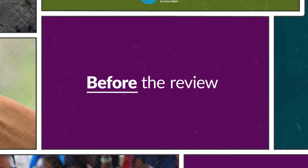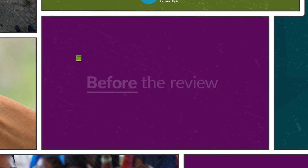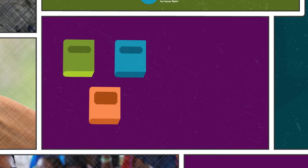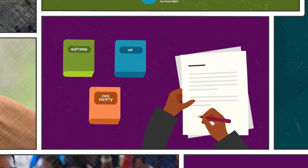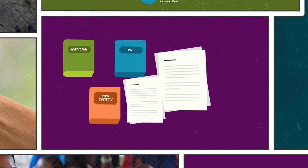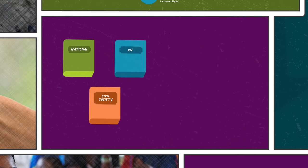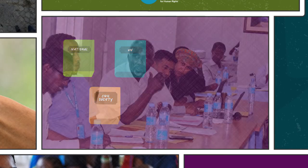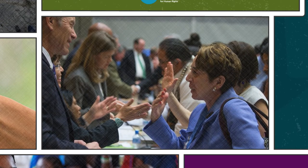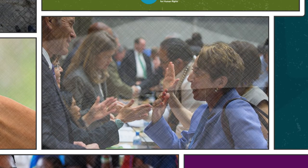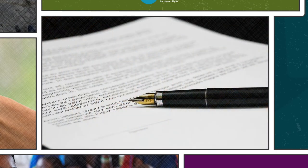Before the Review: The review is based on information submitted in national, UN and civil society reports. By contributing to these reports, you can influence the content and course of the review itself. For example, you might participate in a national consultation or lobby your government directly to make sure they include your concerns in the official state report.